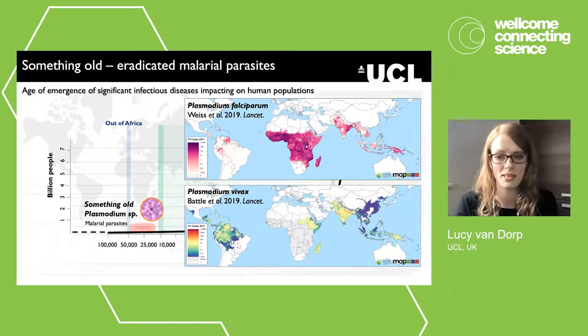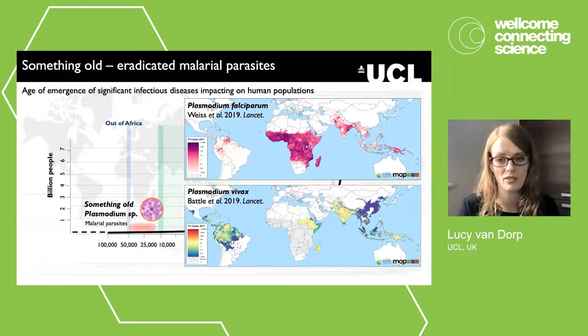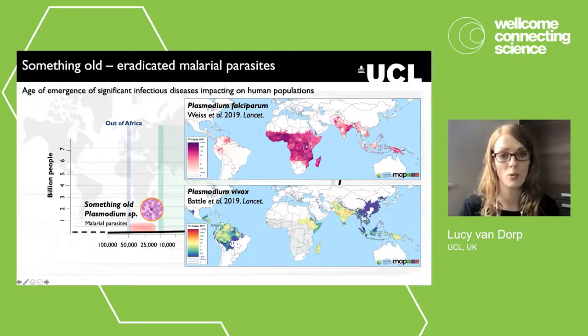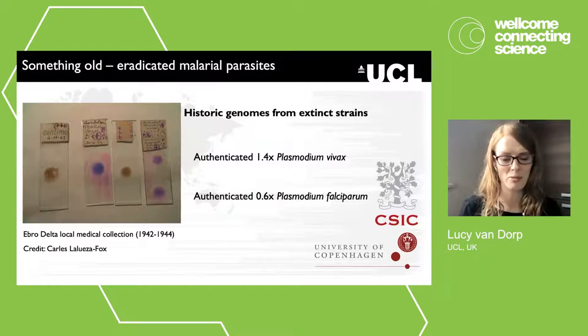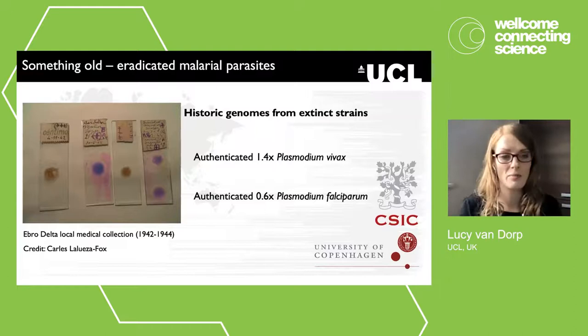Malaria was eradicated from all European countries during the second half of the 20th century, with Spain being one of the last footholds — final eradication declared in 1964. This lost diversity of European malarial parasites limits our ability to track modern dispersal events and understand pathogen evolution as a whole. This is a good example of the possible sources of ancient biomolecules: not only archaeological remains, but also past collections of clinical samples.